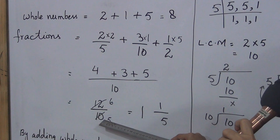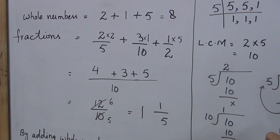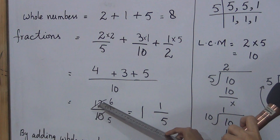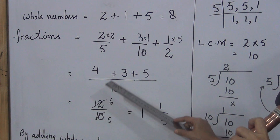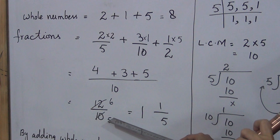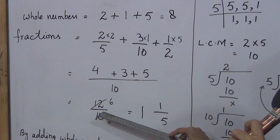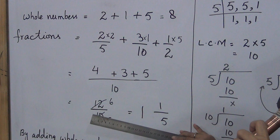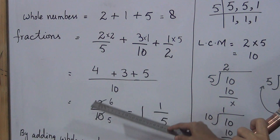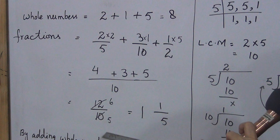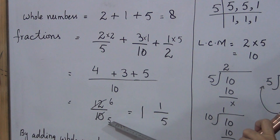We see that 12 upon 10 can be further simplified, because 12 and 10 are both in a times table. If the numbers were not on the table, we would stop here. But since they are, we simplify: 12 divided by 2 is 6, and 10 divided by 2 is 5. So the simplified fraction is 6 upon 5.